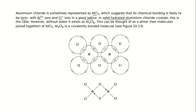Now in solid hydrated aluminium chloride crystals, this is the case. That means if we have solid hydrated aluminium chloride, the structure is ionic. So there is ionic bond between Al3+ cation and chloride ions.